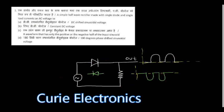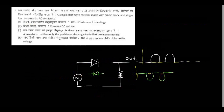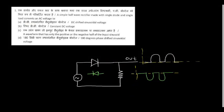A simple half-wave rectifier made with a single diode converts an AC voltage to a waveform that has only the positive or negative half of the input sinusoid.